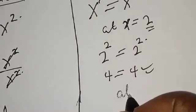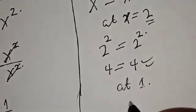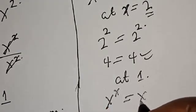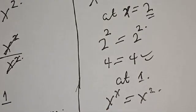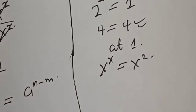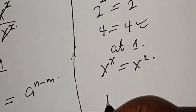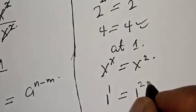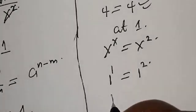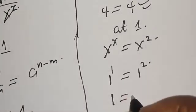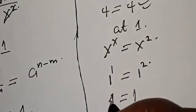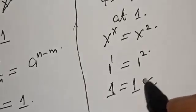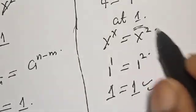Let's check at s equals one. We have the given equation: s raised to power s is equal to s squared. Then we have one raised to power one, is equal to one squared. One raised to power one is one, and one squared is one — the left hand side equals the right hand side. We satisfy the given equation at s equals one.